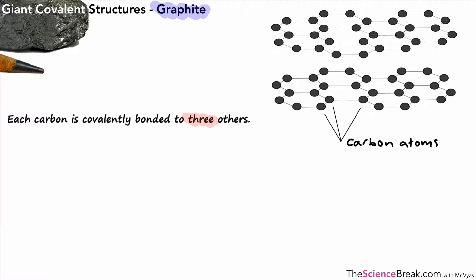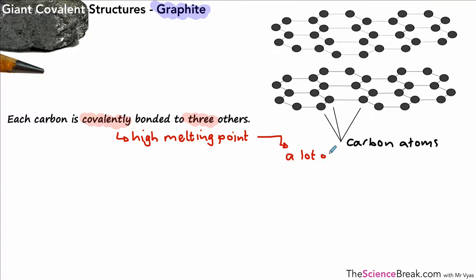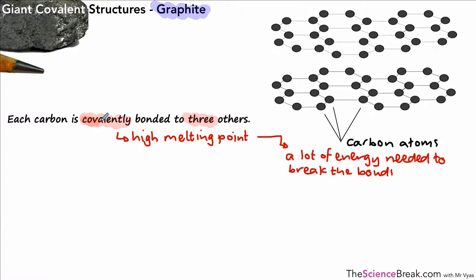Each carbon atom is covalently bonded to three other carbon atoms. If you take any one of those carbon atoms in the middle — not the ones on the edges — you'll see they're bonded to three others. Those bonds are covalent bonds, and because they're covalent bonds, graphite has a high melting point. A lot of energy is needed to break apart those carbon atoms because the covalent bonds are strong.